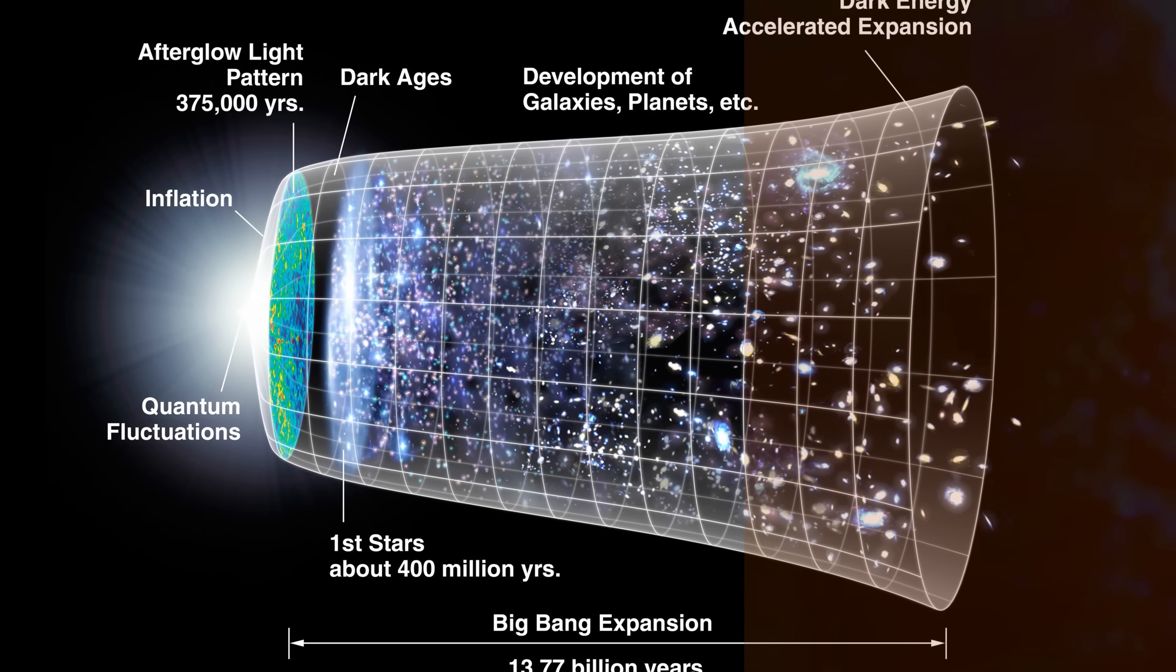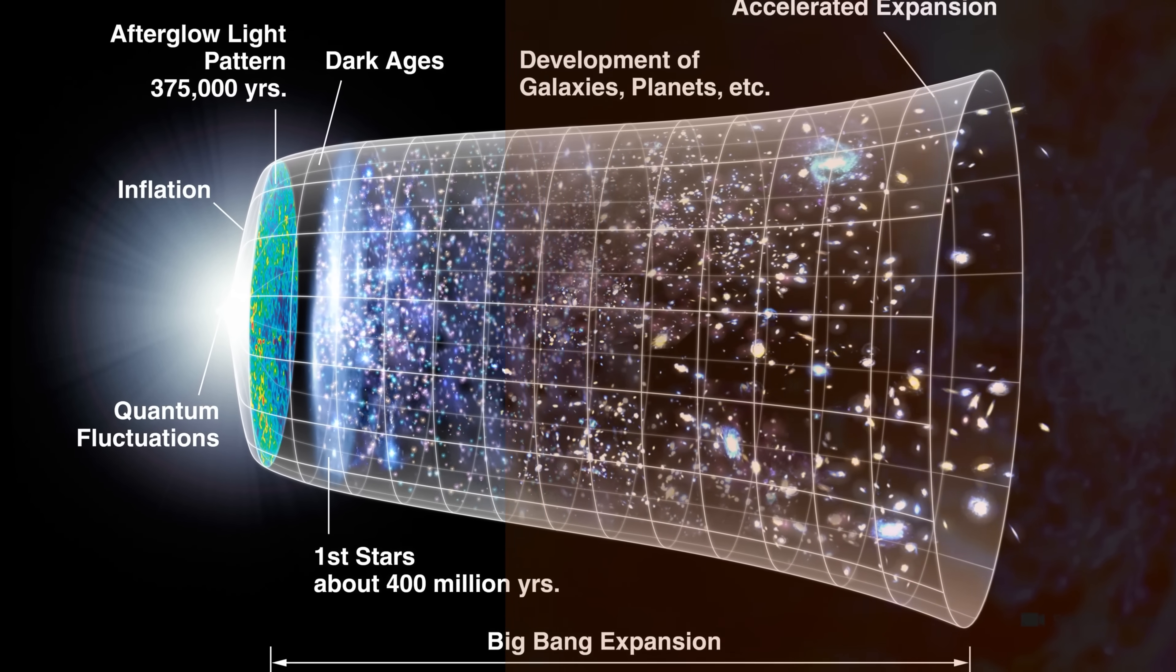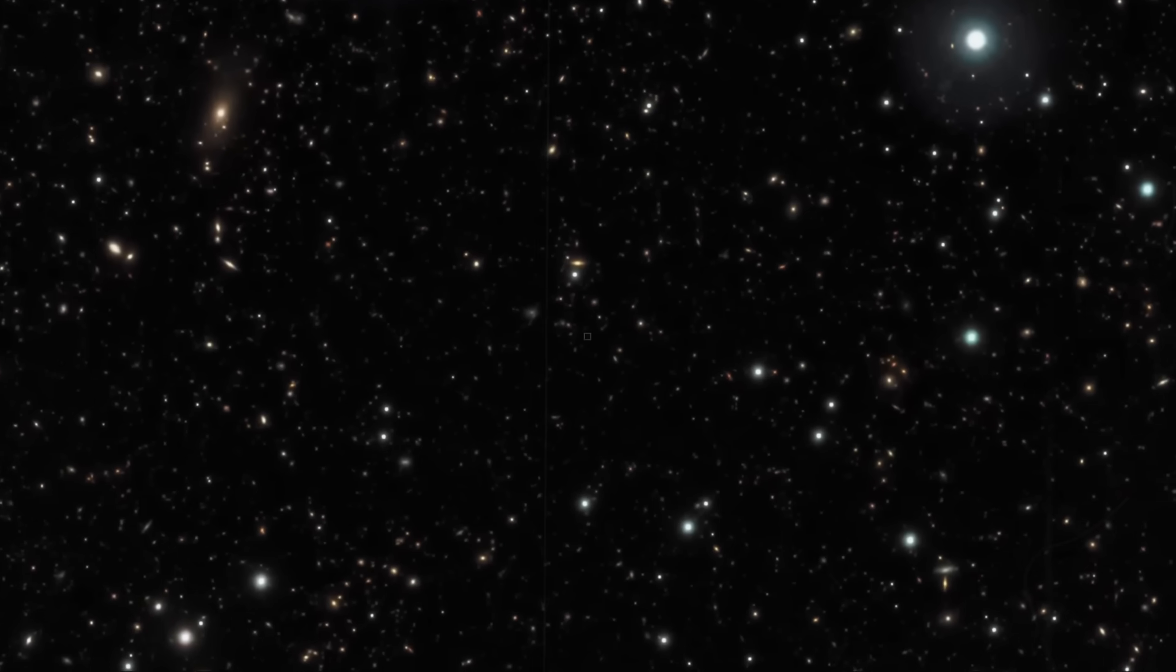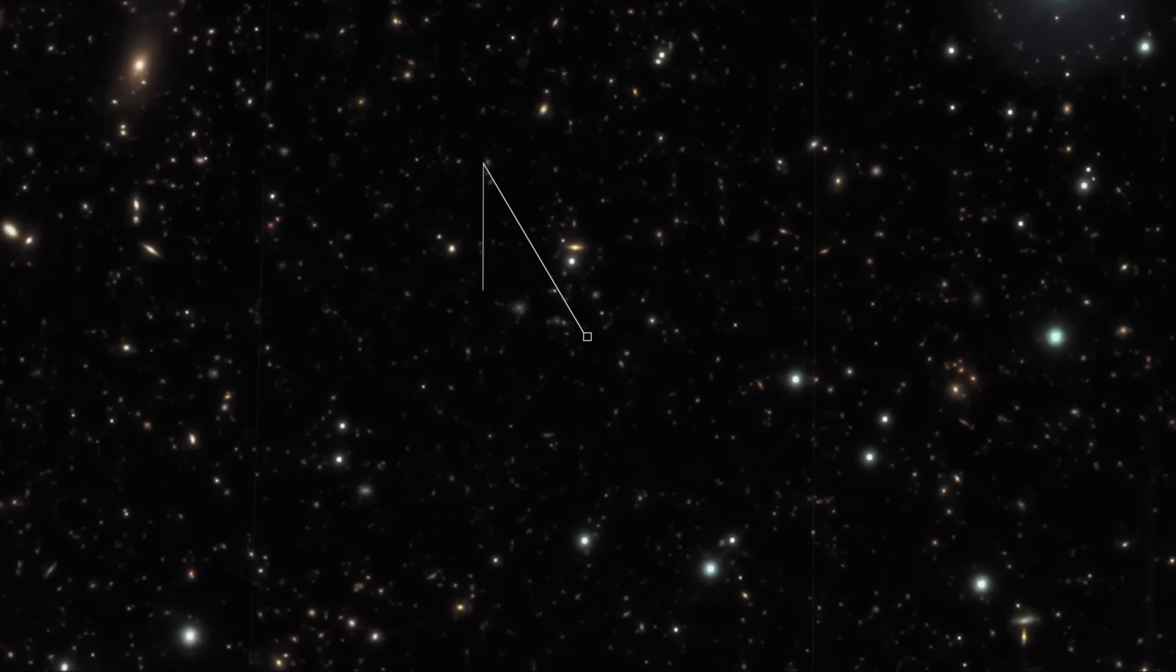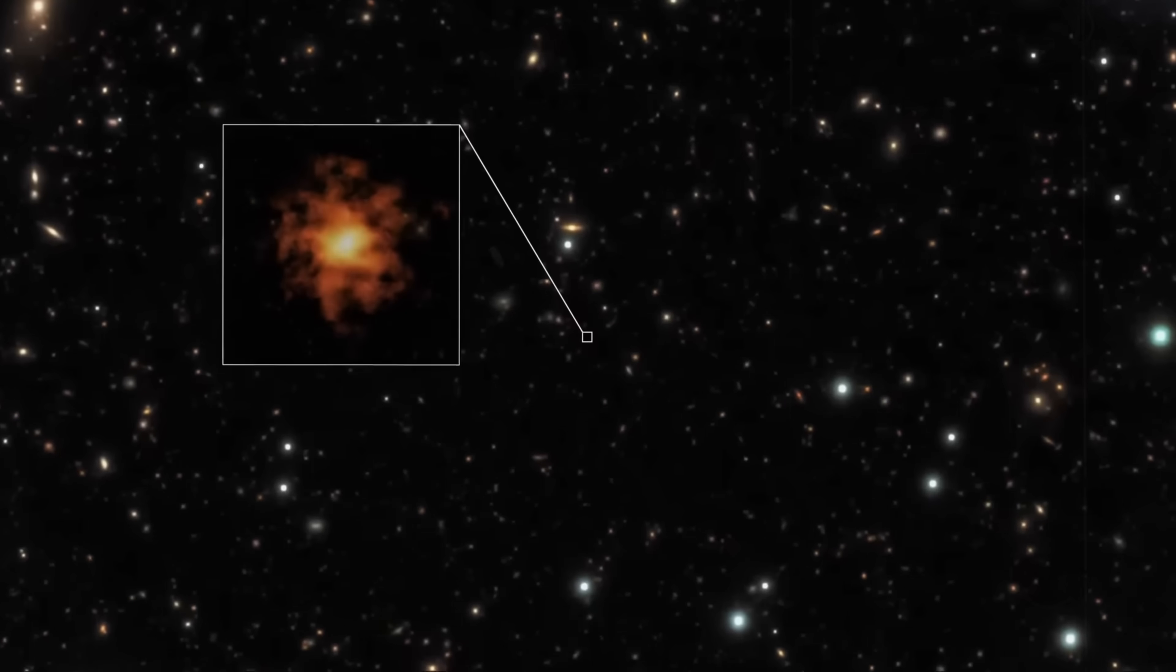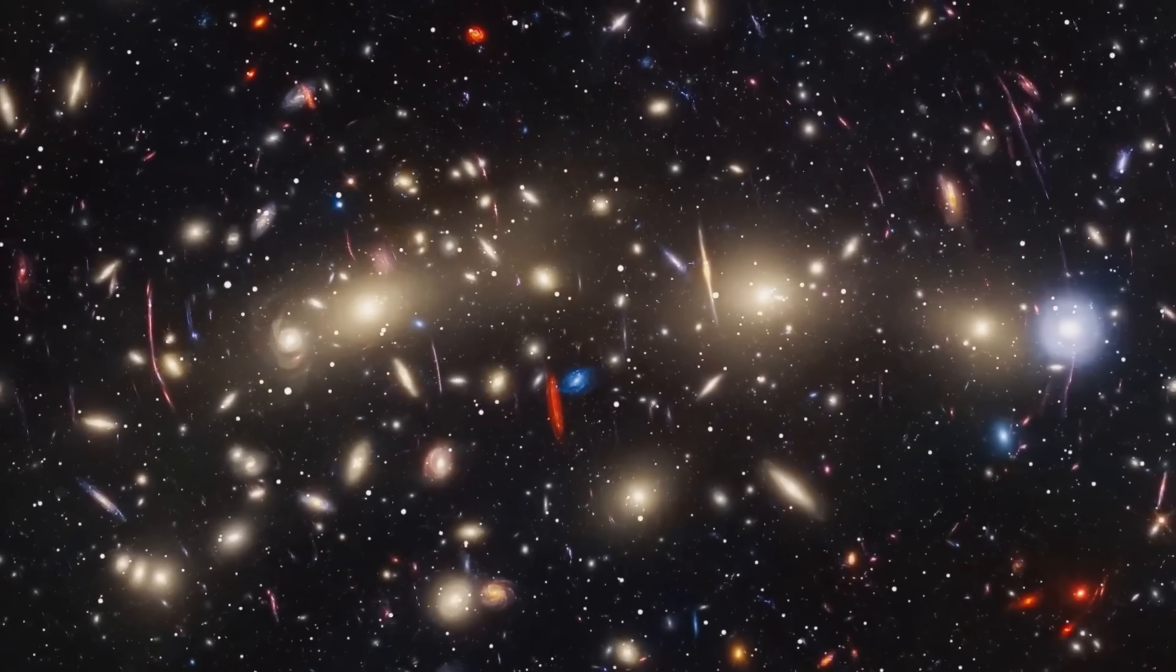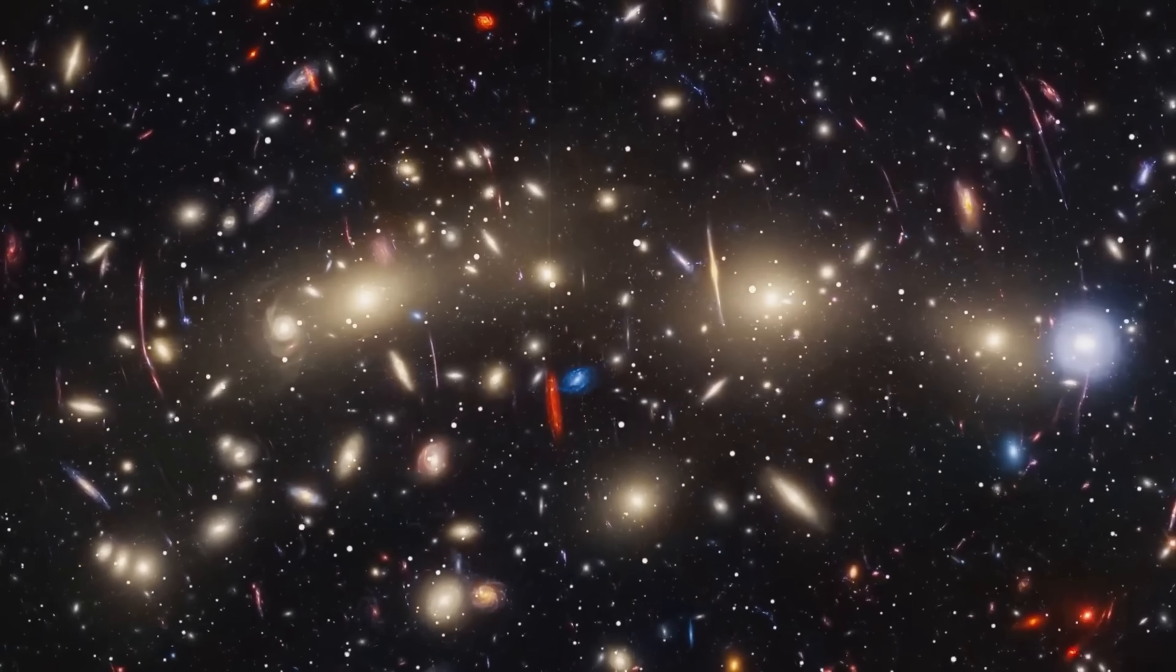According to the Standard Model, galaxies from this early epoch should be small, irregular and chaotic. Instead, Webb has detected huge, well-formed galaxies with intricate structures, forcing scientists to reconsider the entire timeline of cosmic evolution.